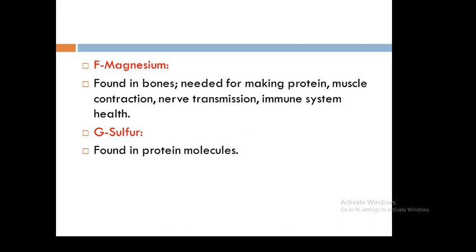Lastly among macro minerals, sulfur is found in protein molecules. It occurs in foods as part of protein, such as meat, poultry, fish, eggs, legumes, and nuts.